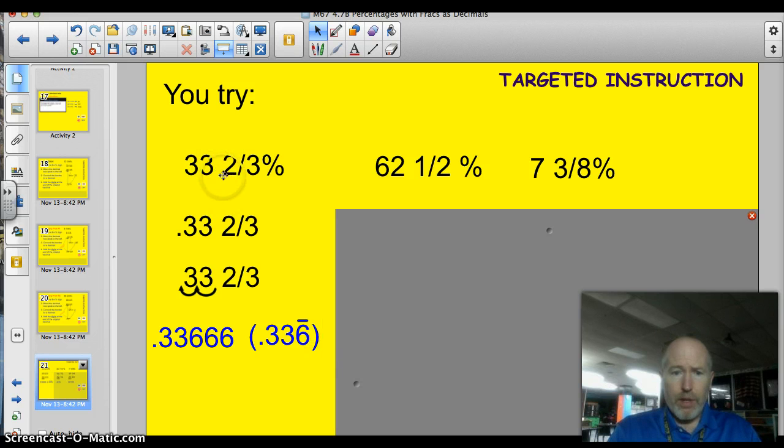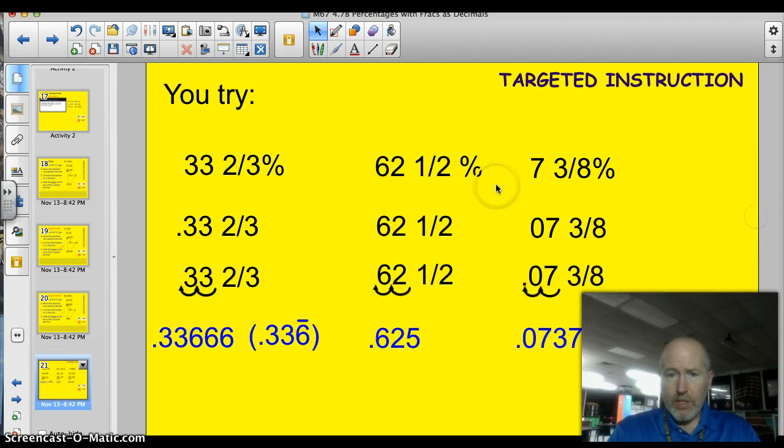Well, 33 and 2 thirds percent. Get rid of the percent sign. Add the decimal. I guess I added the decimal there, too. And then convert the fraction to a decimal, which is 6666 is 2 thirds, right? So, you could express it this way, or 0.336 repeating. Let's take a look at the last two.